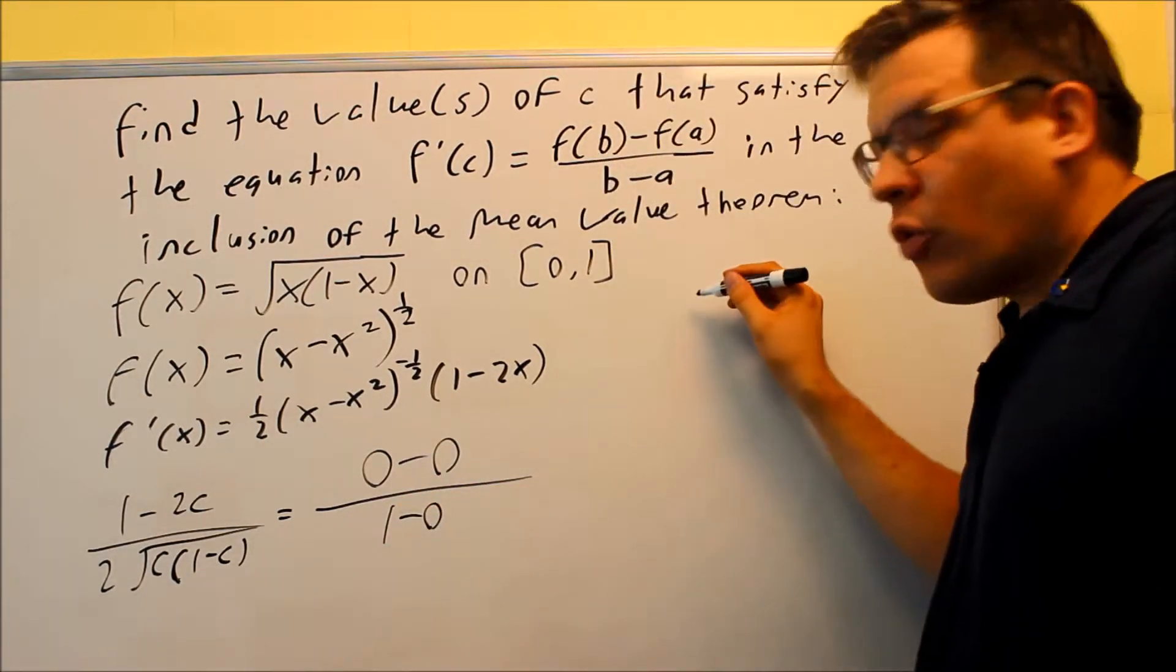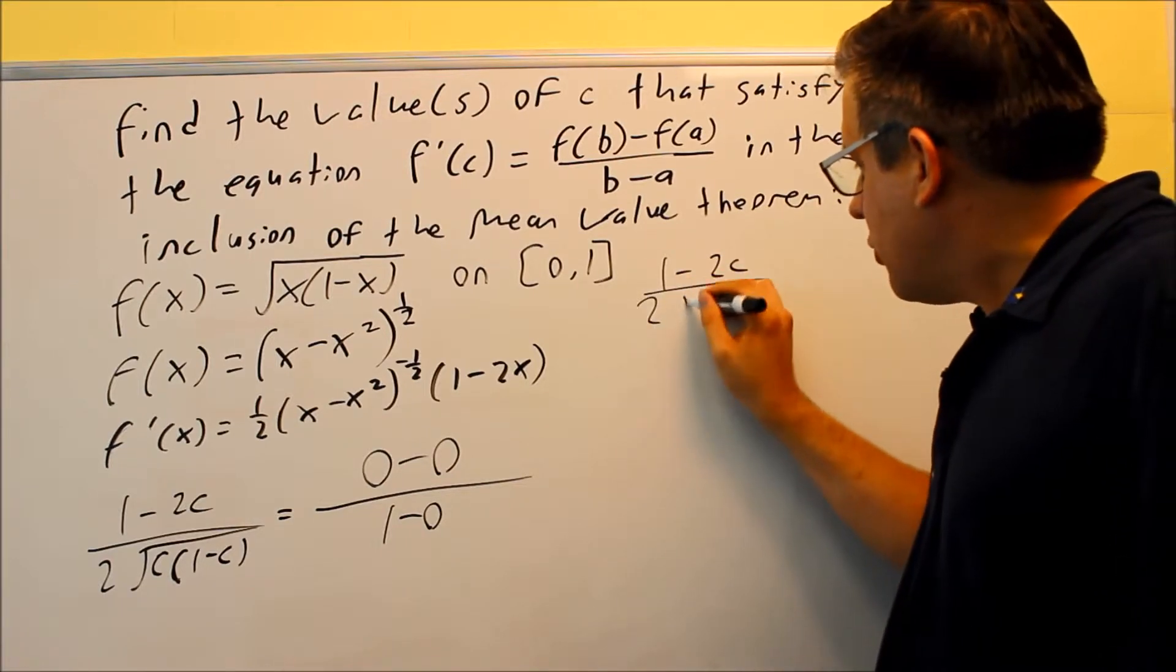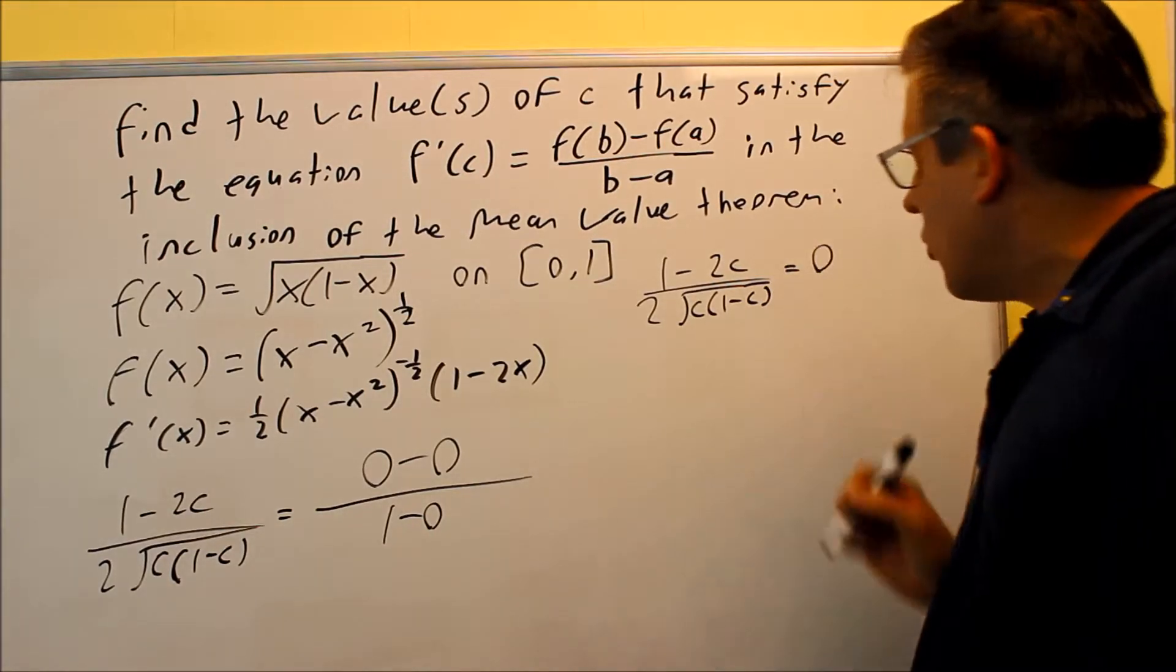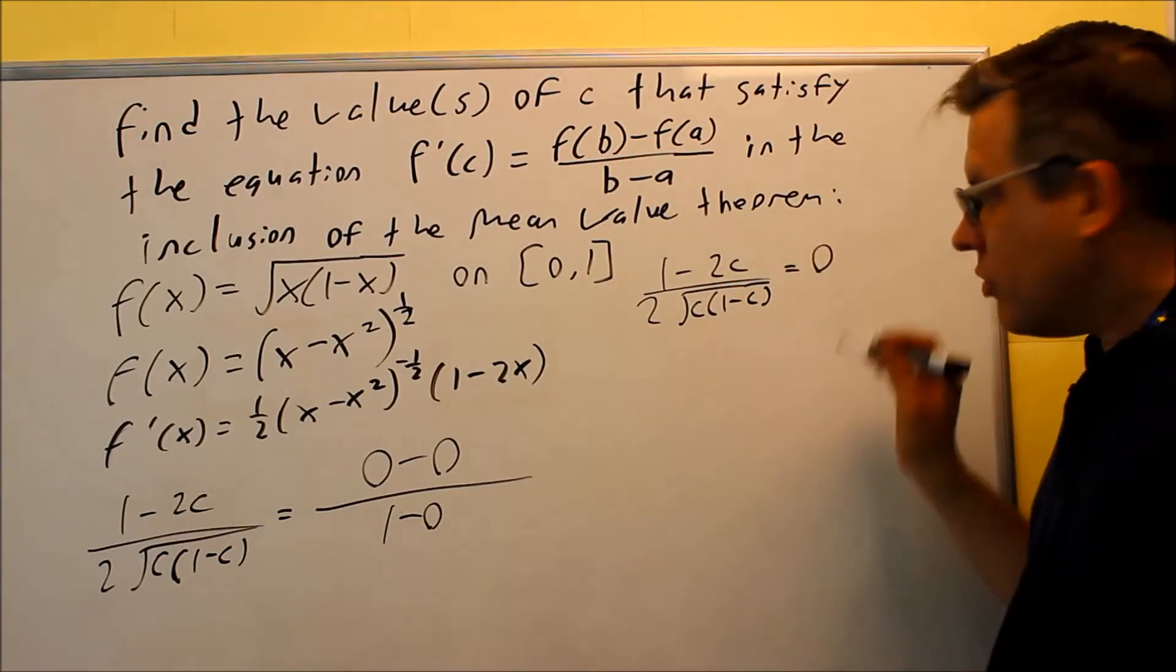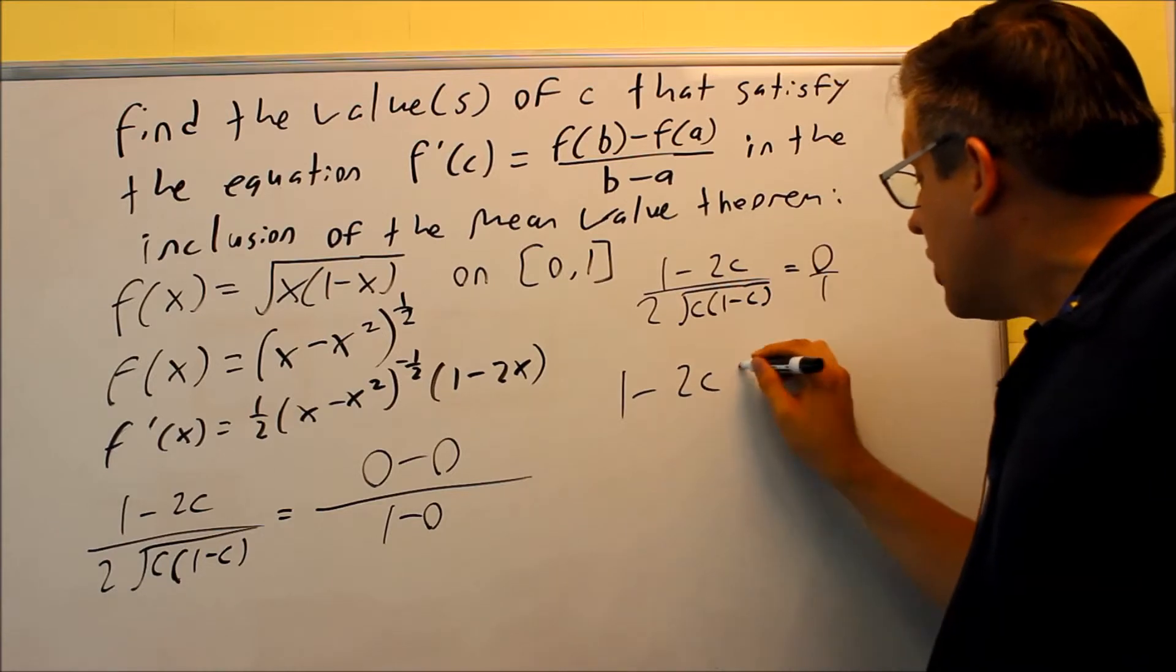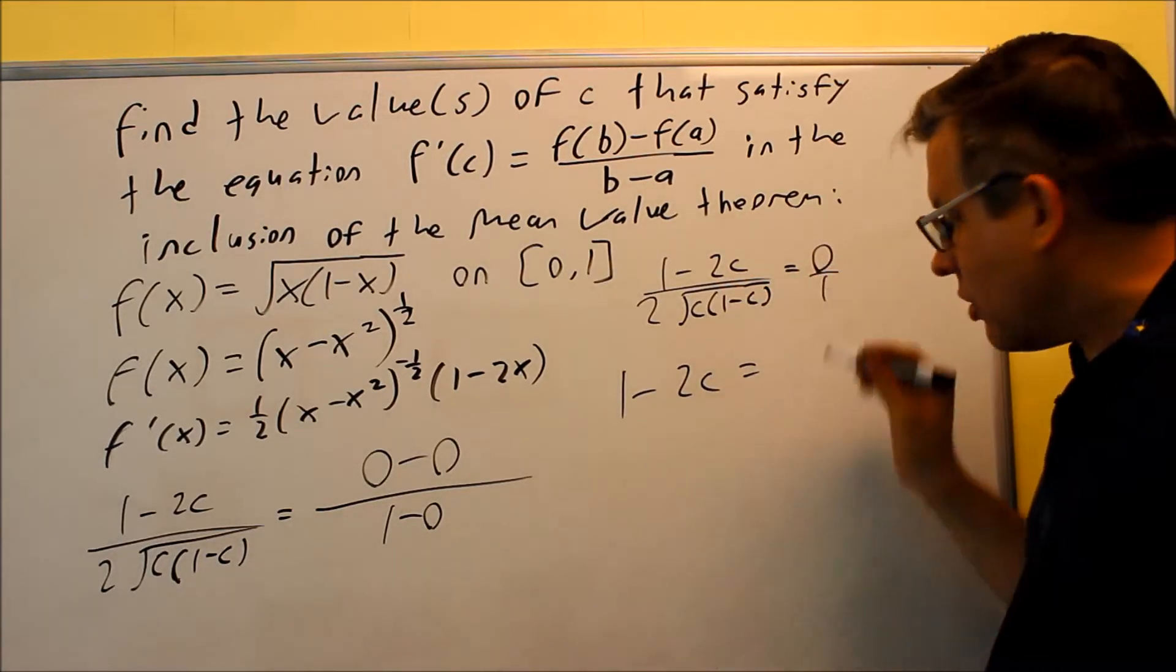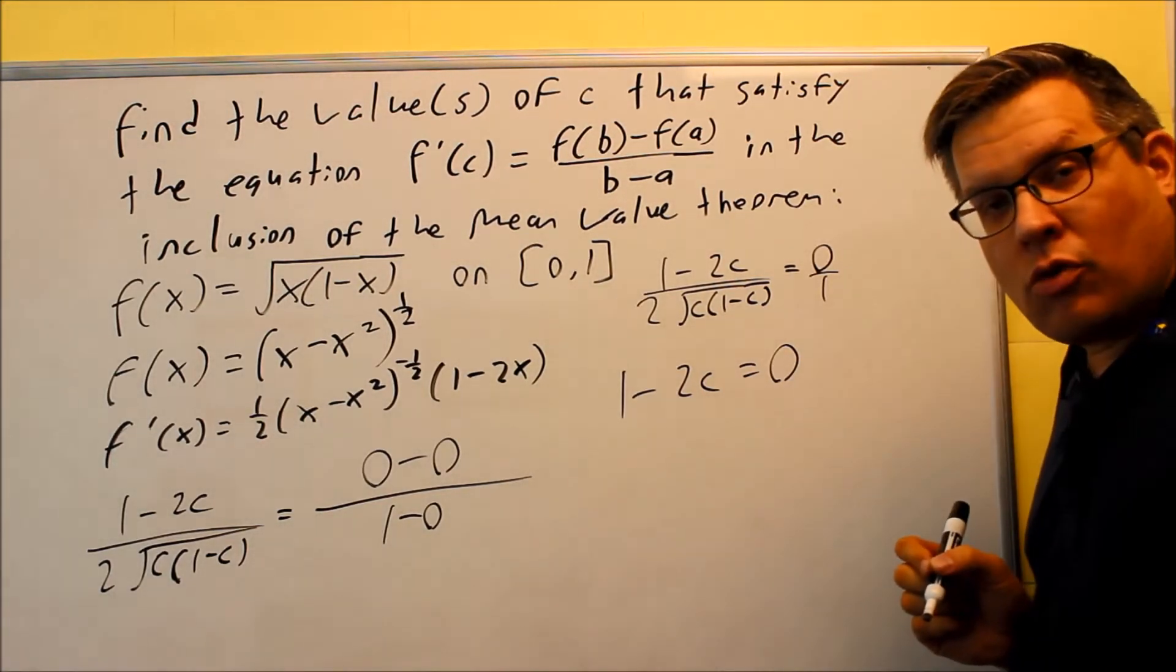So therefore, the equation I want to solve is going to be this one. 1 minus 2c over 2 square root c times 1 minus c. This has to equal 0. To solve for something like this, we're going to do cross multiplication. So if I multiply these two, I get 1 minus 2c. But if I multiply this diagonal, 0 times anything is 0. So therefore, I get 1 minus 2c is going to equal 0.